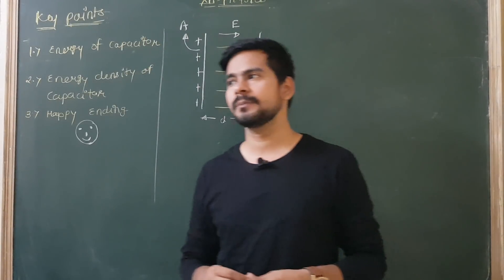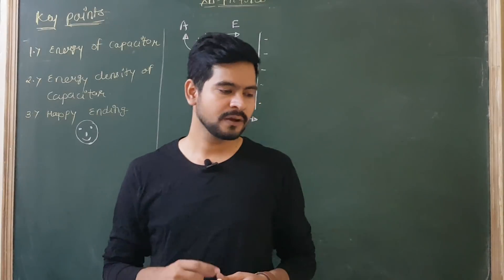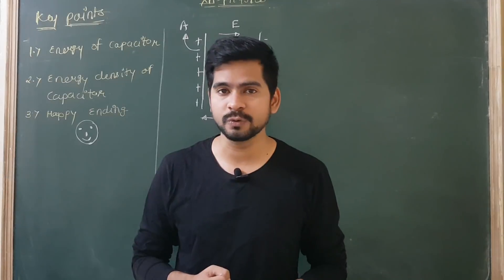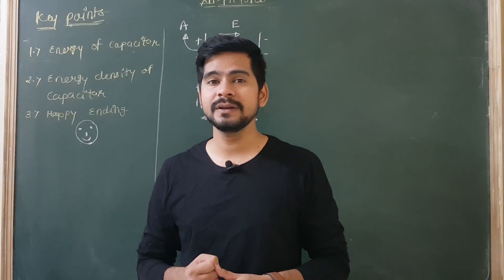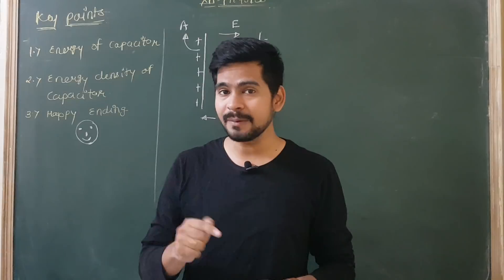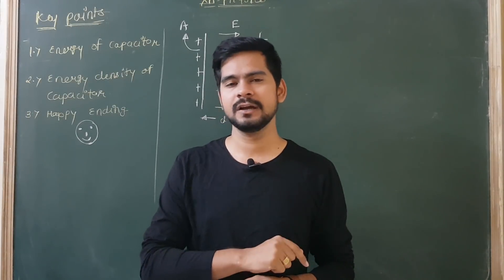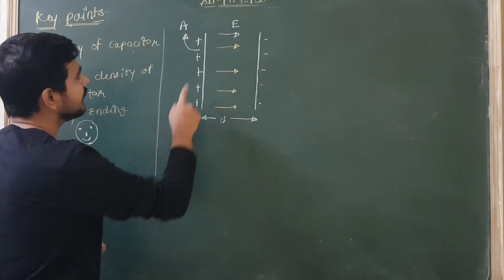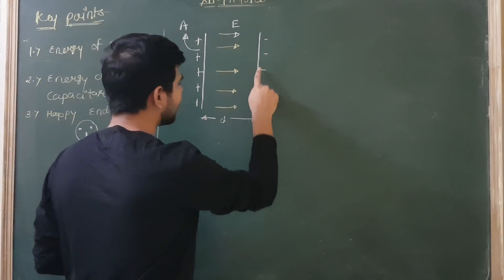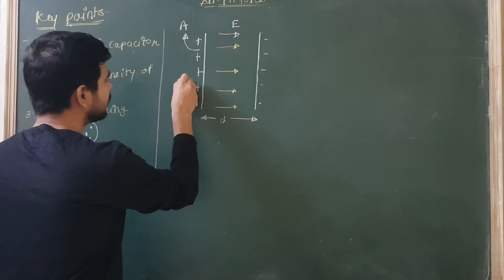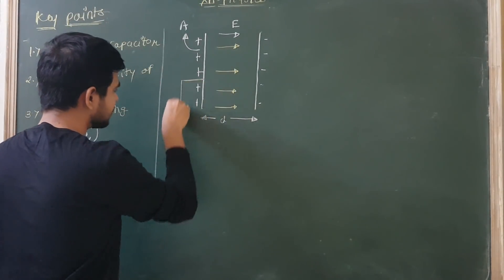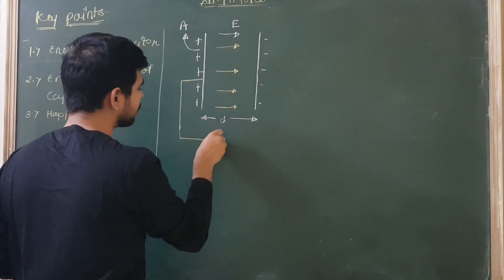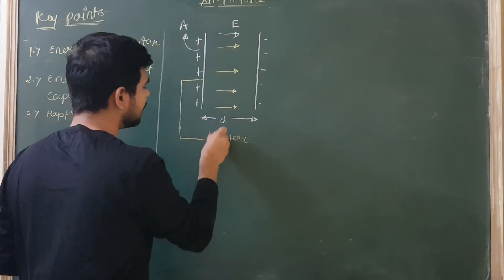The first thing that comes to mind is: what is energy? Think about the basic concept — energy means the ability to do work. Here you can see there is a positive plate and a negative plate. When you connect this capacitor, you need a battery to charge it. If you have a battery, you can charge the capacitor and store energy in it.